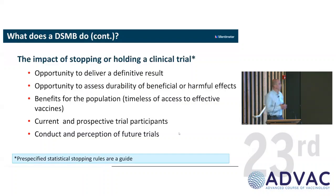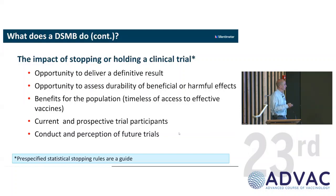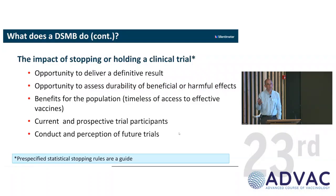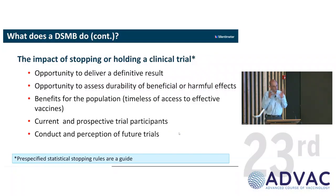It's important to recognize the impact of stopping or holding a trial. Stopping a trial impacts the opportunity to deliver a definitive result, may prevent seeing the durability of beneficial effects or later harmful effects. But it may have benefits for the population — in a pandemic, access to a vaccine early is really important. It will impact trial participants' access to the vaccine, but also their exposure to vaccine effects. Going around stopping every trial because of a slight safety signal will affect the conduct and perception of trials in the future. This all needs to be balanced extremely carefully.